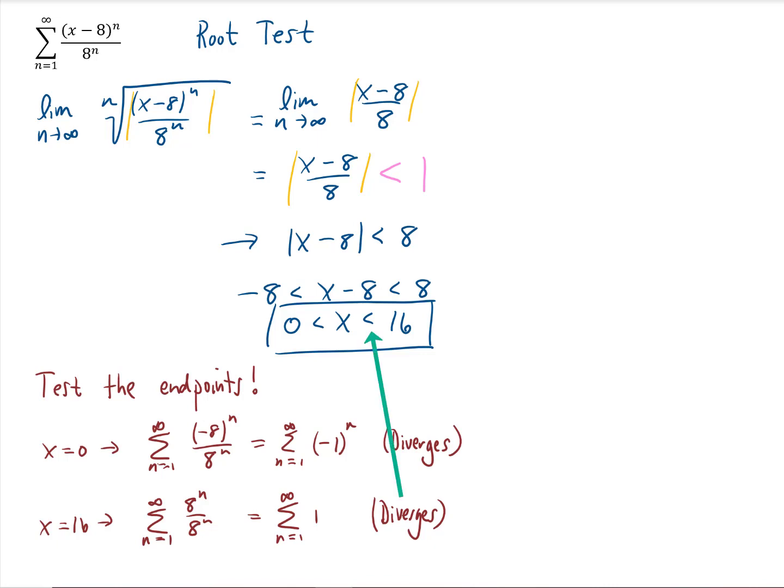So we are not going to add x equals 16 to our interval. Our final interval of convergence goes from 0 to 16, not including the endpoints. And that's going to be our final answer for this problem. Okay, let's keep practicing in the next video. I'll see you there.